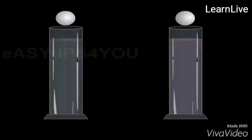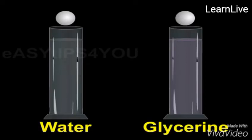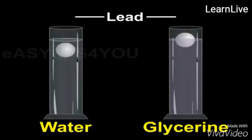Take two long cylinders, one filled with water while the other filled with glycerine. Take two identical lead shots and drop one in water and the other in glycerine at the same time.